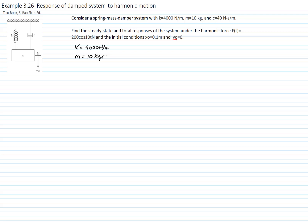They give us the initial conditions: position equals 0.1 and velocity equals 0. With the spring constant and the mass, we can calculate the natural frequency of the system, which is 20 radians per second. We can also calculate the damping ratio, which is C over the critical damping, equal to 2 times the square root of km. Inputting the values, we get zeta equal to 0.1.